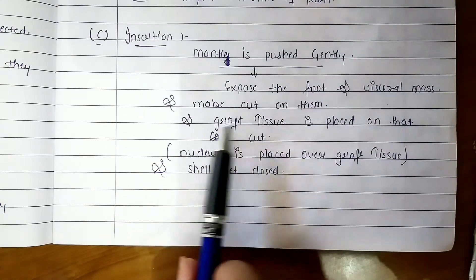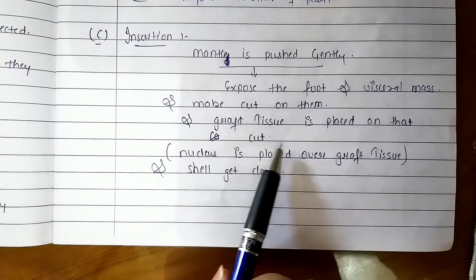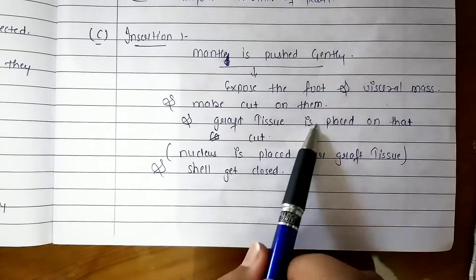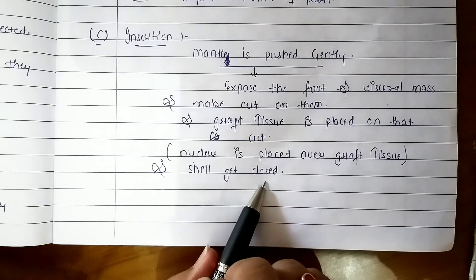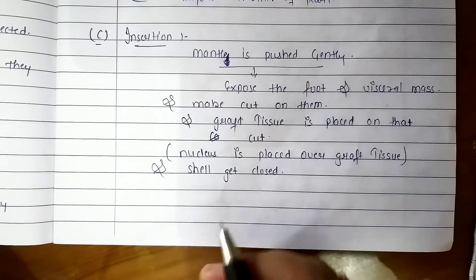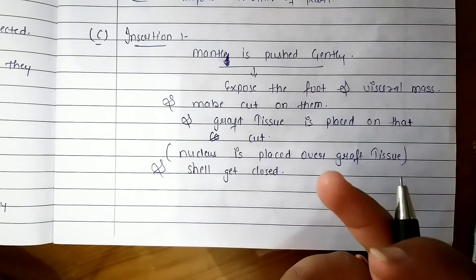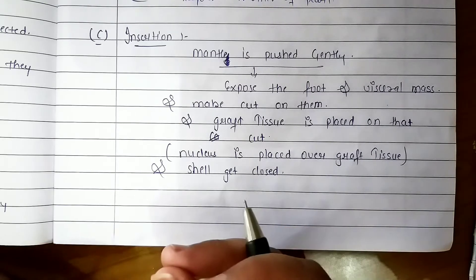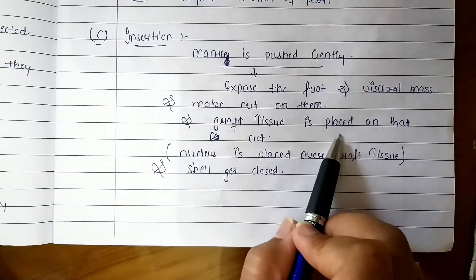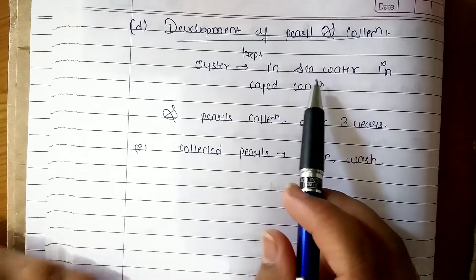Now we have to prepare the graft tissue with the nucleus. We will attach the nucleus and insert the cut part. The shell is closed. So this is our insertion. The oyster is clipped, the shell is opened, the nucleus is attached and placed in the insertion, then the oyster is placed in sea water.